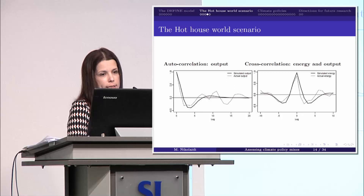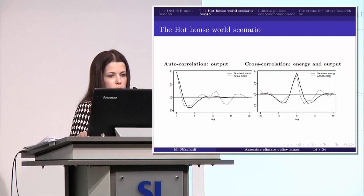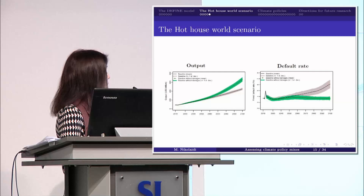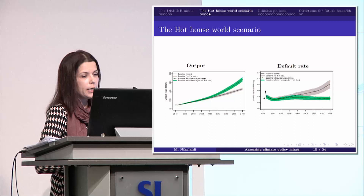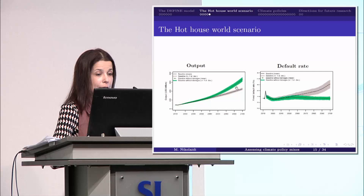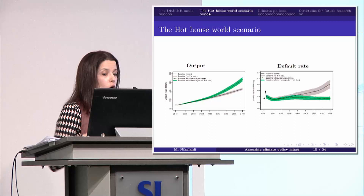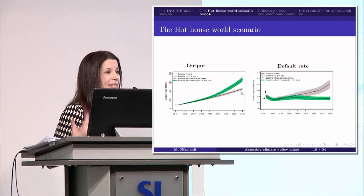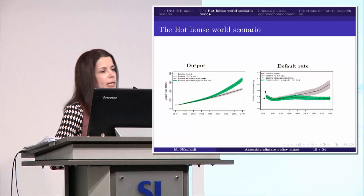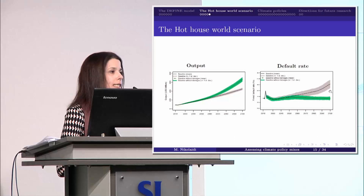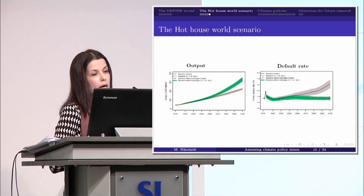We also conduct validation exercises in our model. Let me show you the way output and the default rate are determined in our baseline scenario. The dotted green line shows the increase in economic activity without damages. When we take into account climate damages, we obviously see a decline in economic activity. This decline in economic activity affects the ability of borrowers to pay their debt, and as a result, we have an increase in the rate of default.